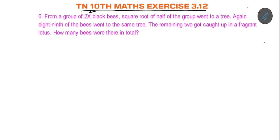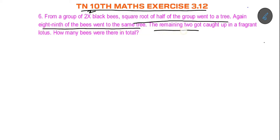From a group of 2x² black bees, square root of half of the group went to a tree. Again, 8 ninths of the bees went to the same tree. The remaining two got caught up in the fragrant lotus. How many bees were there in total? That is the question.